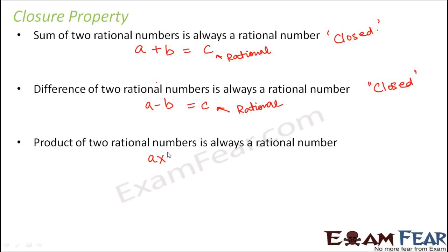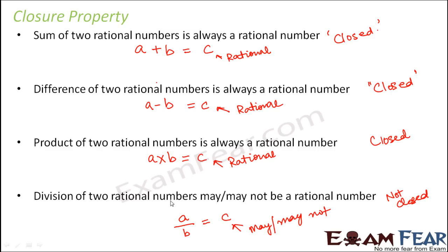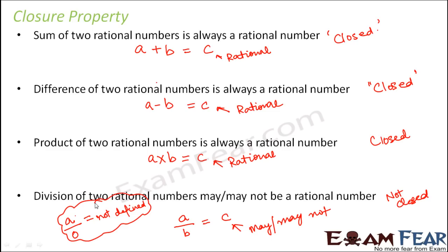When you multiply two rational numbers, you again get a rational number, so rational numbers are closed under multiplication. However, division of two rational numbers may or may not be a rational number — a divided by b may or may not be rational. Therefore, rational numbers are not closed under division. The best example is dividing any rational number by zero: since zero is also a rational number, but anything divided by zero is not defined, and not defined is not a rational number, we say rational numbers are not closed under division.